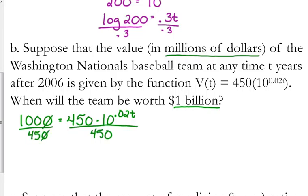So we've got 100 over 45, those are both divisible by 5, so 20 over 9. Now the exponential is isolated, so we can write it in log form. The log of 20 over 9 is equal to 0.02t, and then we need to divide by 0.02.